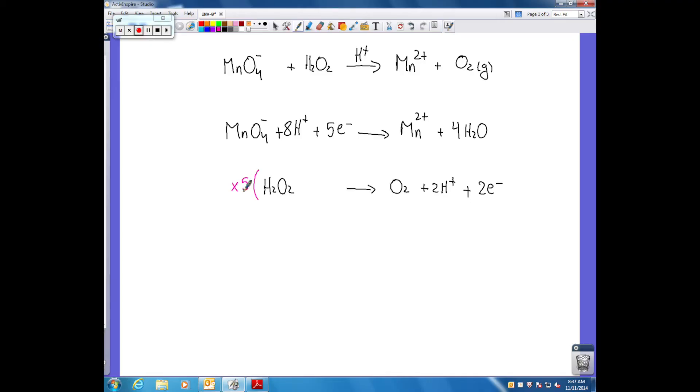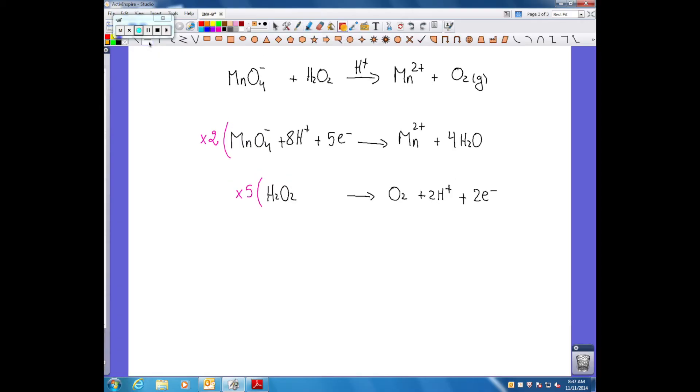Now we multiply the half reaction of hydrogen peroxide by five and the half reaction of MnO4- by two to cancel out the number of electrons used.